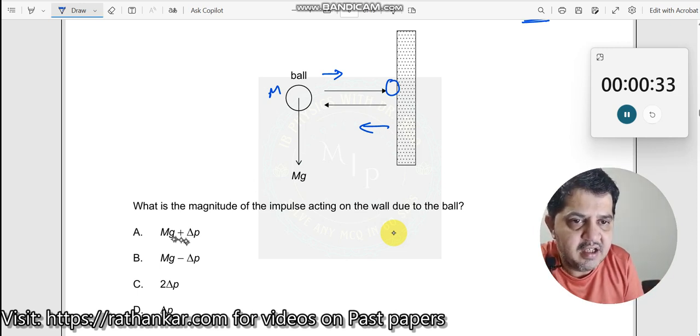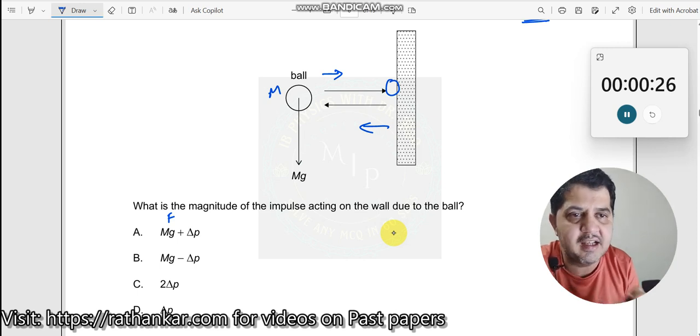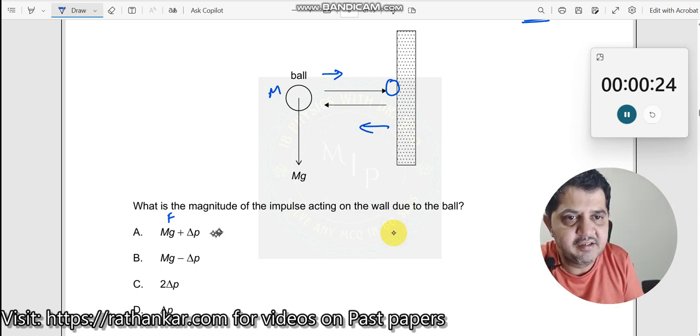Now first let us read the option. mg plus Δp - see this is force, this is change in momentum. Can we equate these two? Can we add these two? You cannot add according to physics principles. You cannot add physical quantities which are having two different units. So this option is definitely incorrect.